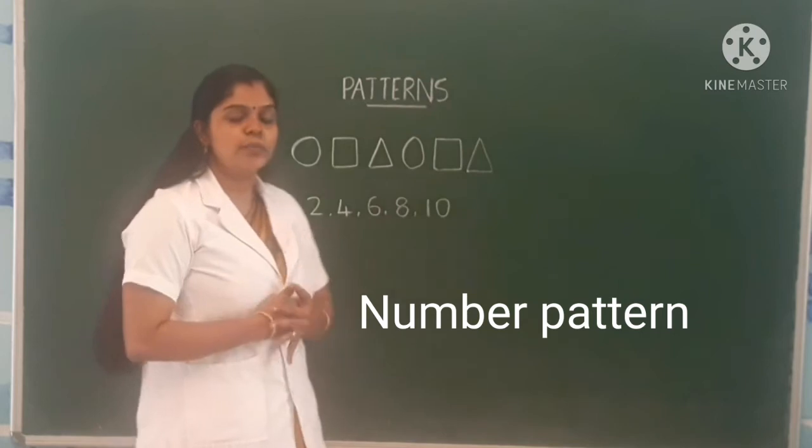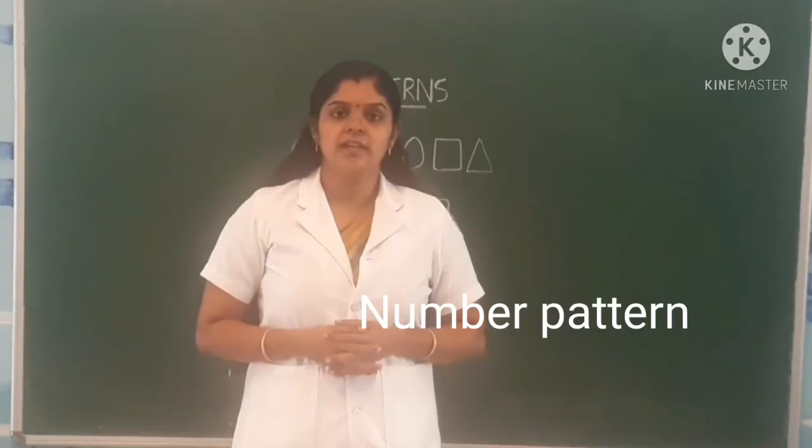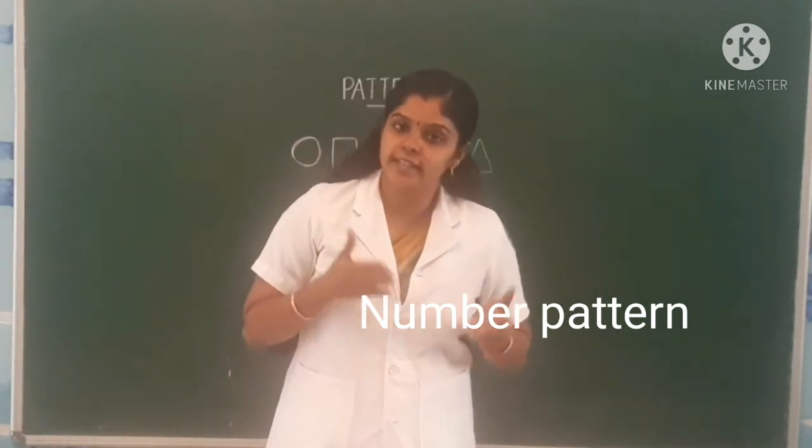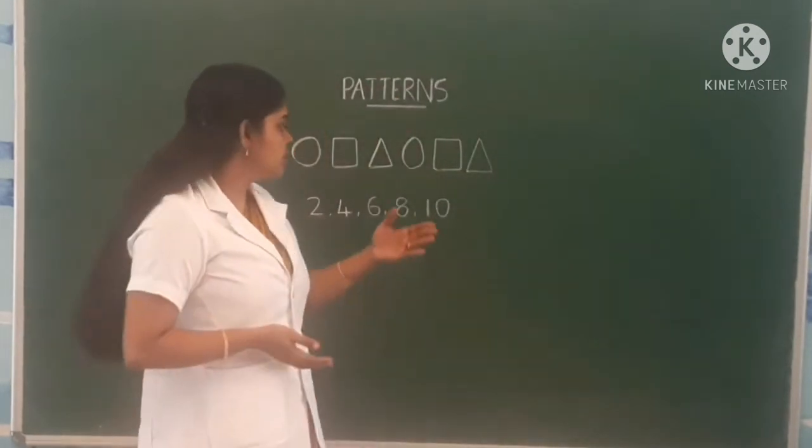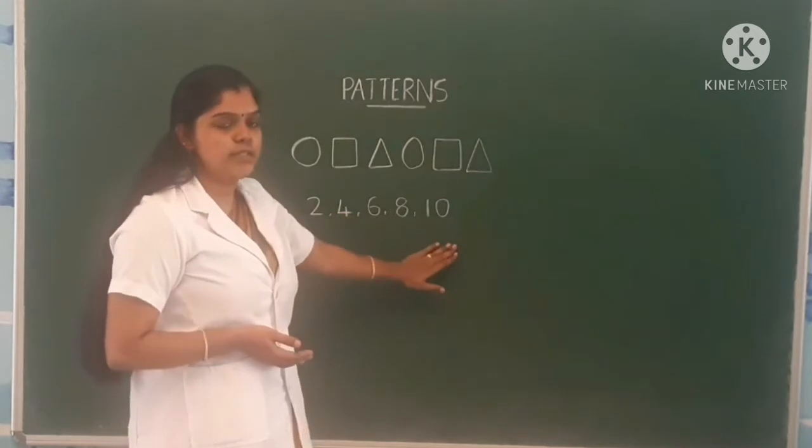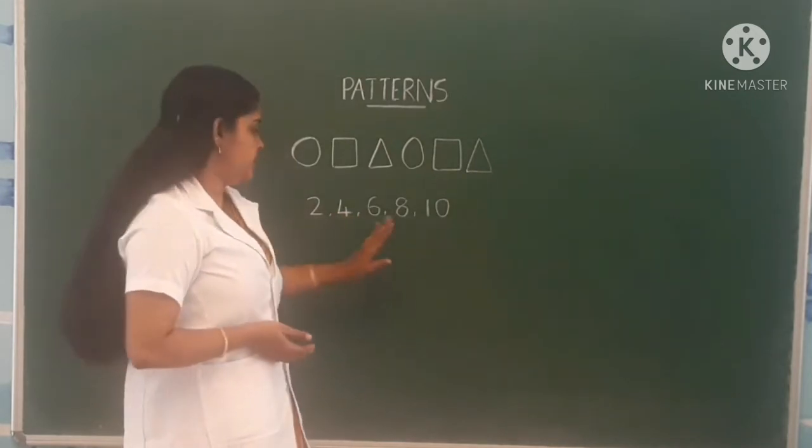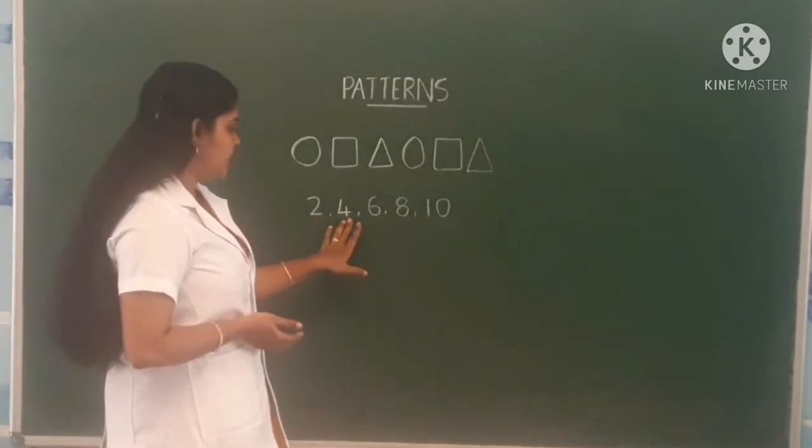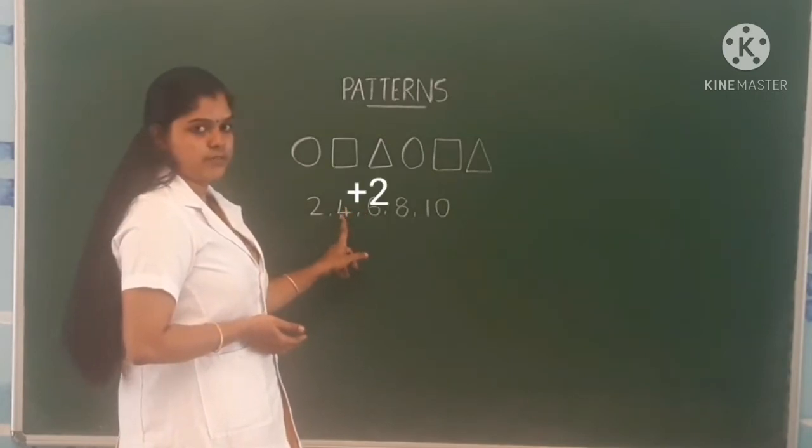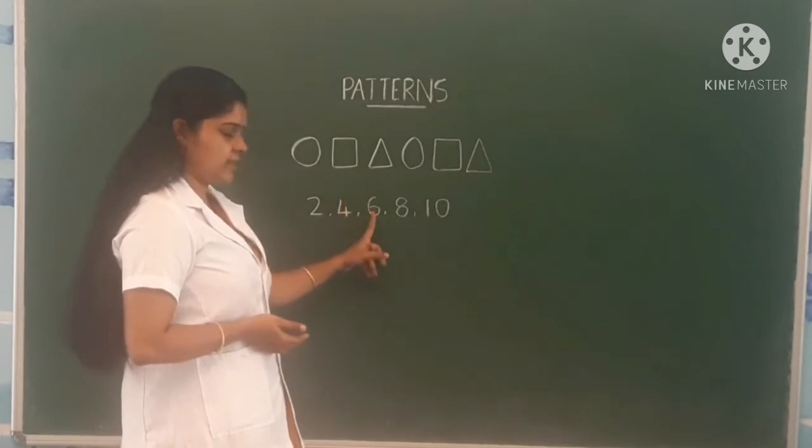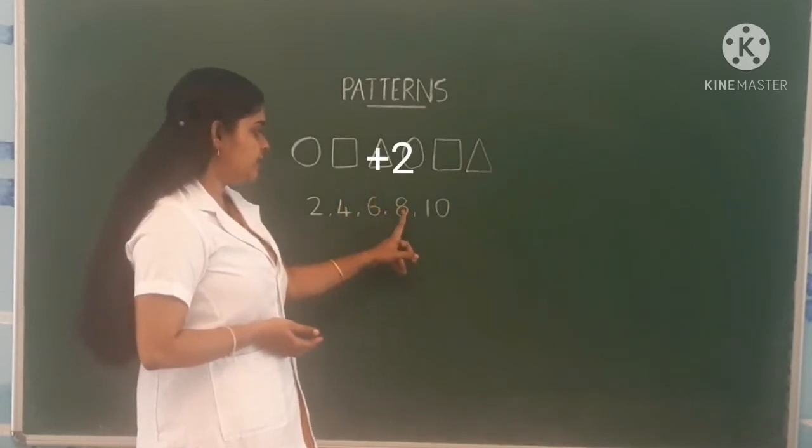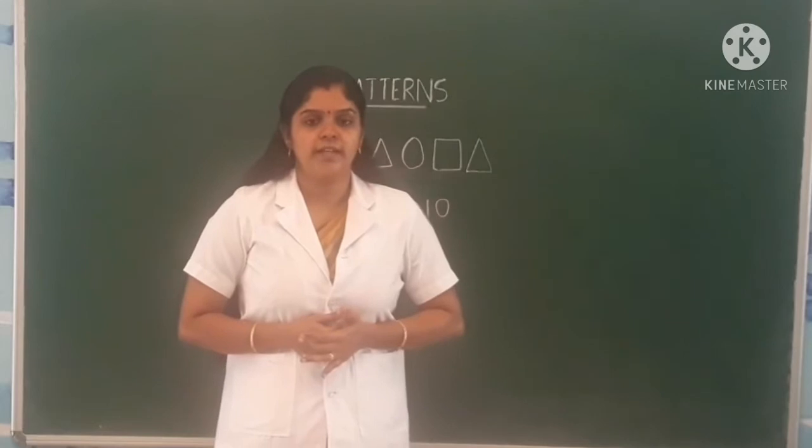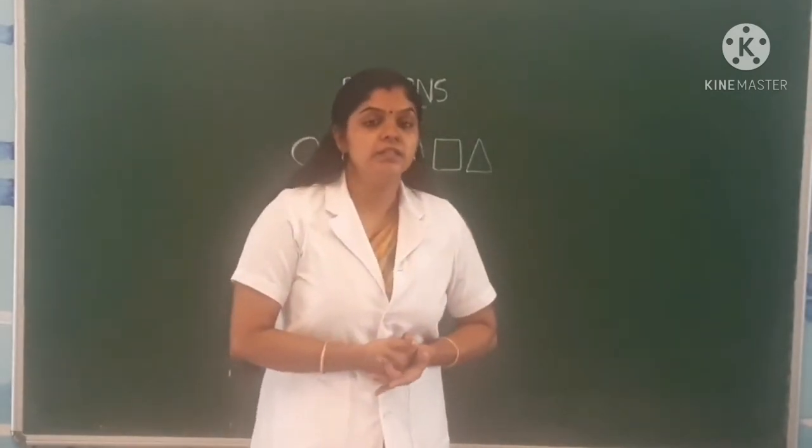So what do you mean by number pattern? Number pattern means a list of numbers which follow a certain sequence or pattern. So see here, these numbers follow a pattern. How? When we add 2 to this number, we will get 4. Like that, when we add 2 to this number, what will we get? 4 plus 2? 6. 6 plus 2? 8. 8 plus 2? 10. Like that the sequence follows. So that is what we mean by shape pattern and number pattern.